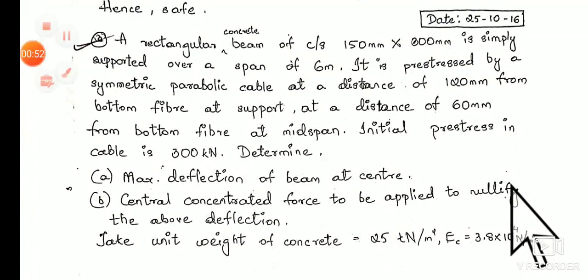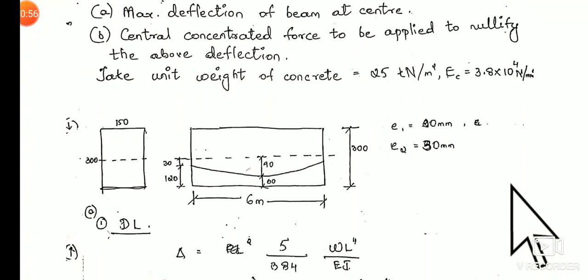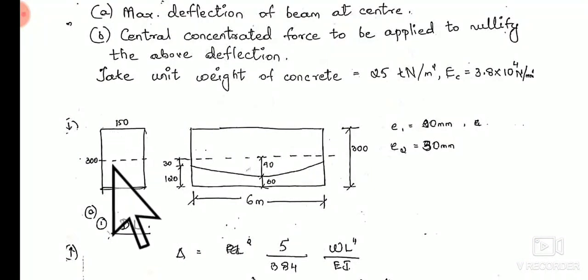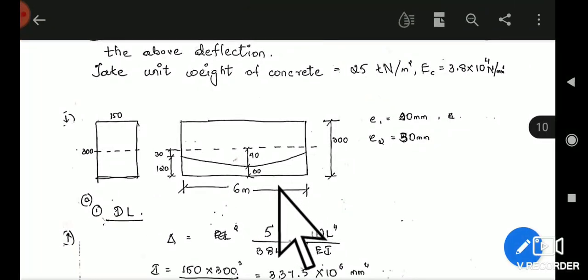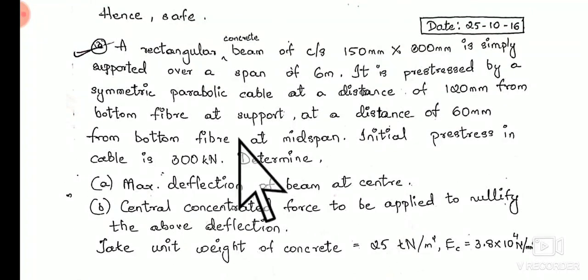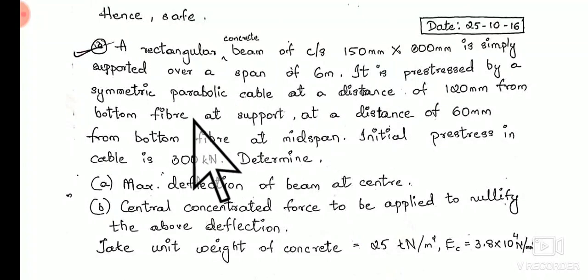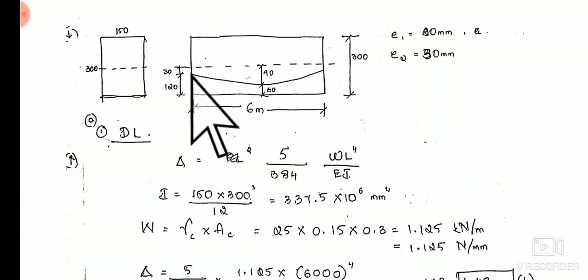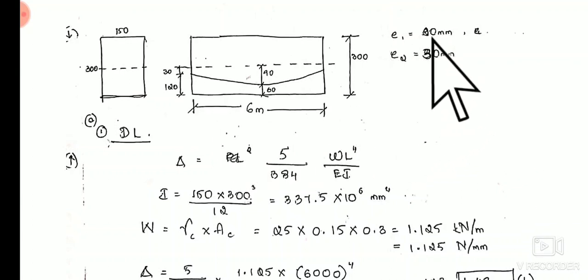Coming to the solution, first we need to write down the cable profile as per the given data. The cross-sectional dimension is 150 by 300 mm, and the span is 6 meters. The cable is located at a distance of 120 mm from the bottom of the beam at the supports, so the eccentricity at the support, E2, is equal to 150 minus 120, which gives E2 = 30 mm.